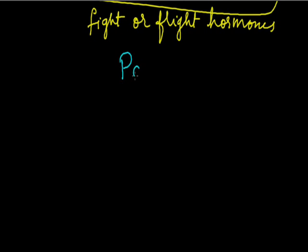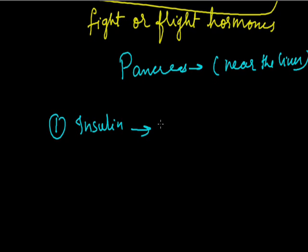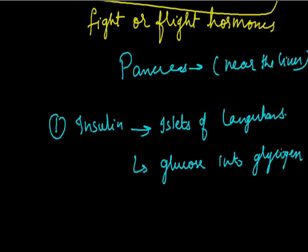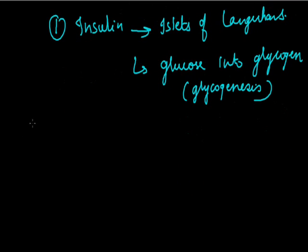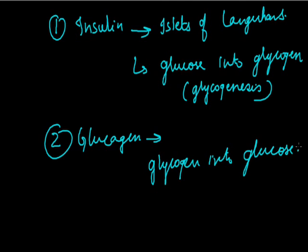The pancreas is the only heterocrine gland in the human body, situated near the liver. Its first hormone is insulin, secreted by special cells called islets of Langerhans. Insulin is required to convert glucose into glycogen so that glucose can be stored in the body — a process called glycogenesis. The second hormone is glucagon, which causes breakdown of liver glycogen, thereby releasing glucose into the bloodstream, converting glycogen back into glucose.